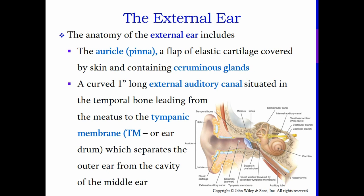The auricle is a flap of elastic cartilage covered by skin and containing ceruminous glands — the glands in your ear that produce cerumen, or ear wax. Your external ear has a curved, one-inch-long external auditory canal situated in the temporal bone, leading from the meatus to the tympanic membrane. The opening in that bone for your ear canal is called the external auditory meatus. Your tympanic membrane is also known as your eardrum.